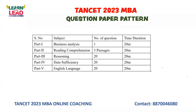Reasoning can be done in advance. There are a total of 60 questions. For reading comprehension, they can give you either 2 lengthy passages, or 4 small passages, but the last time it was 3 passages.